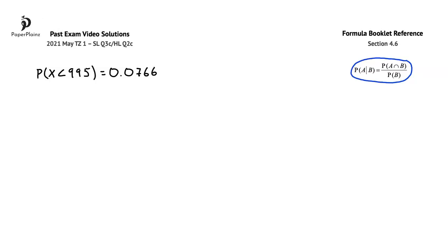What this formula tells us is that the probability of A given that B is equal to the probability of A and B over the probability of B.